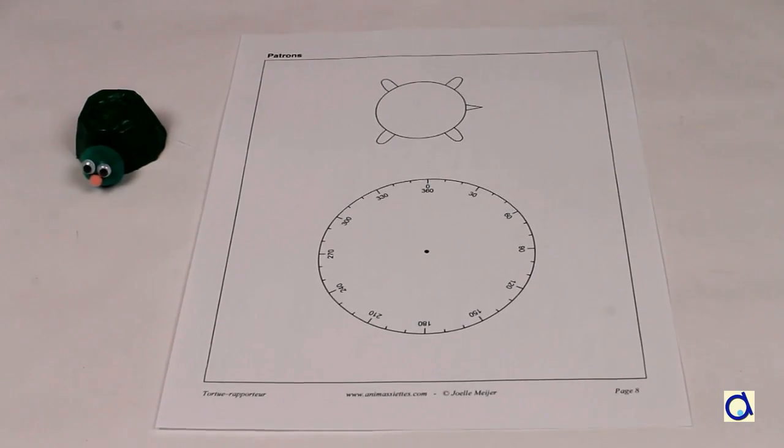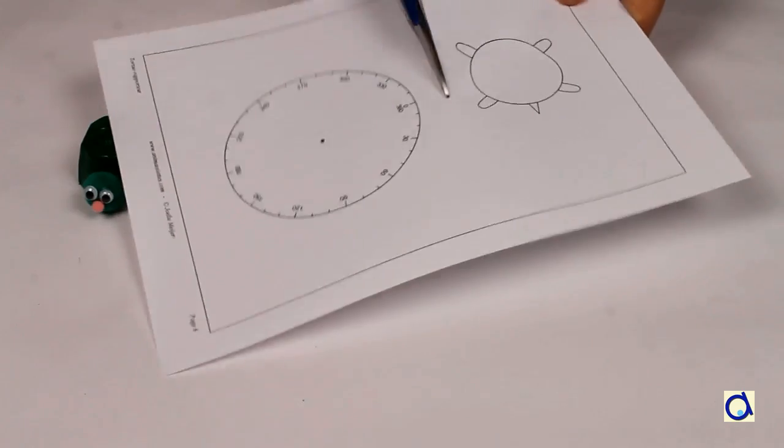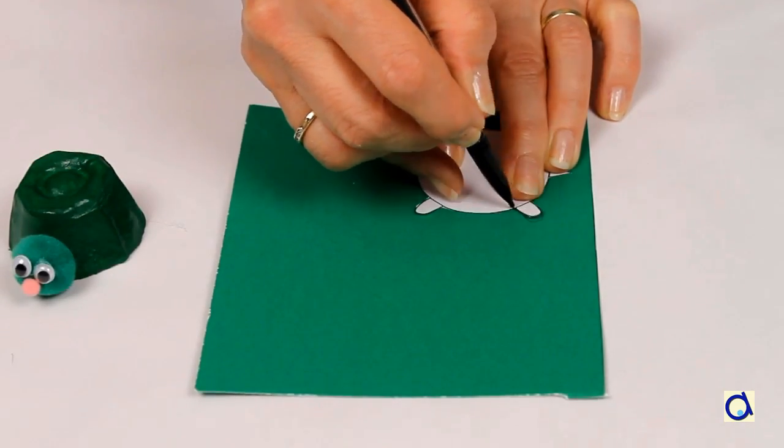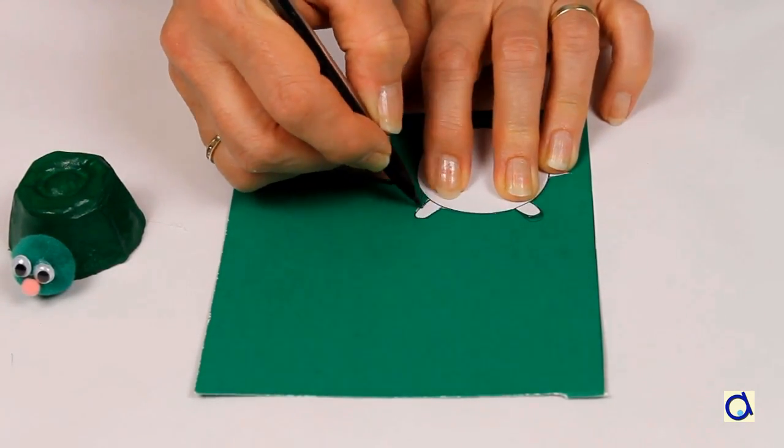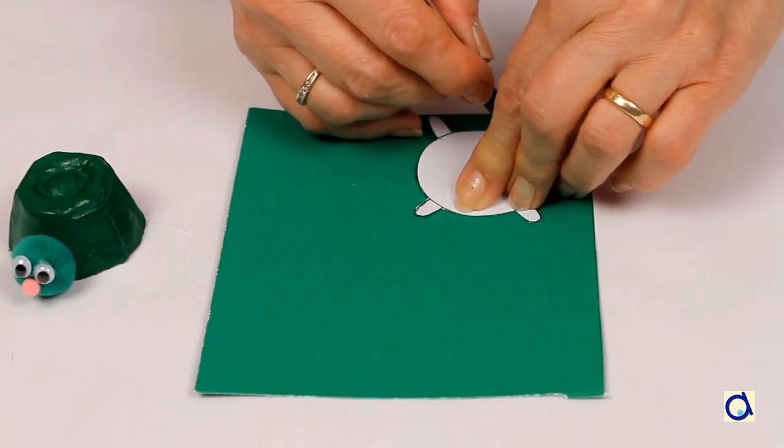Cut out the pattern of the legs of the turtle that you will find in the printable document. Trace the contour of the pattern on heavy green construction paper and cut it out.